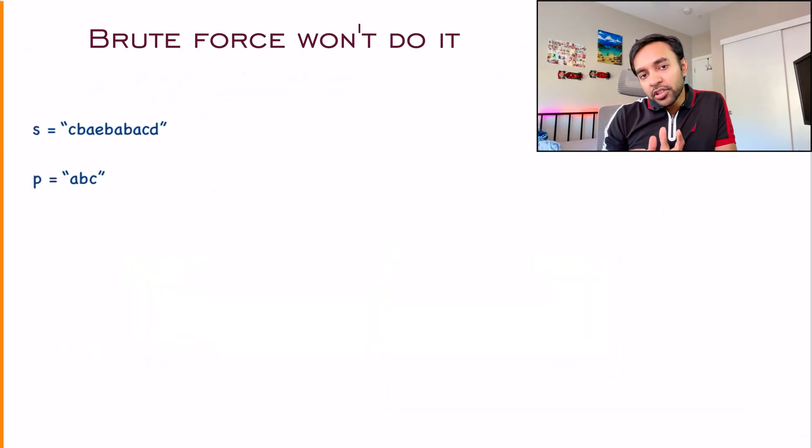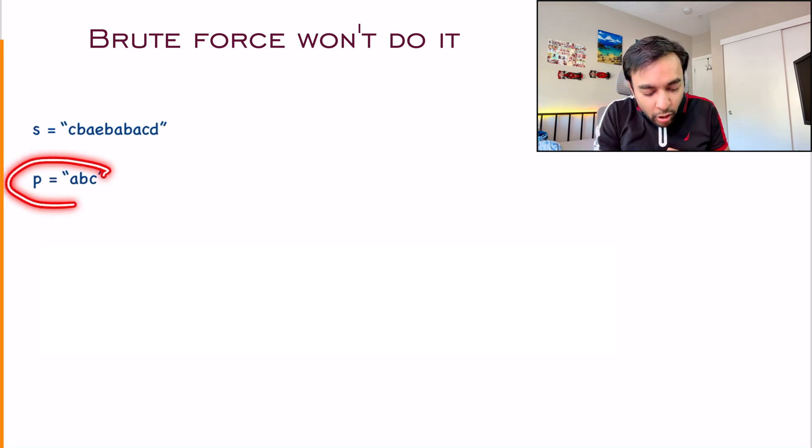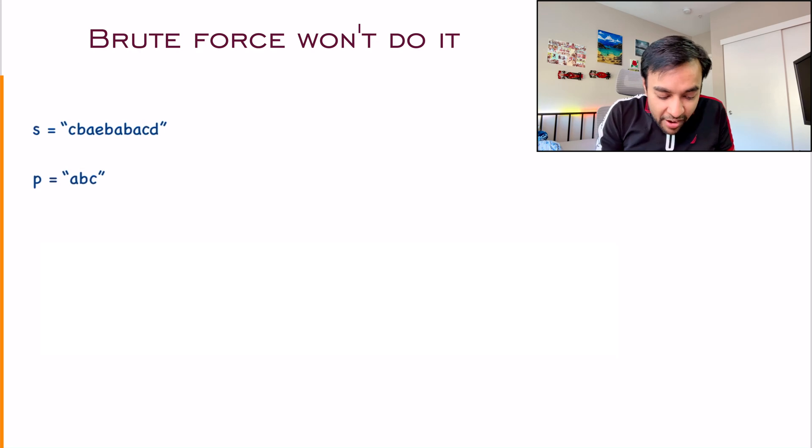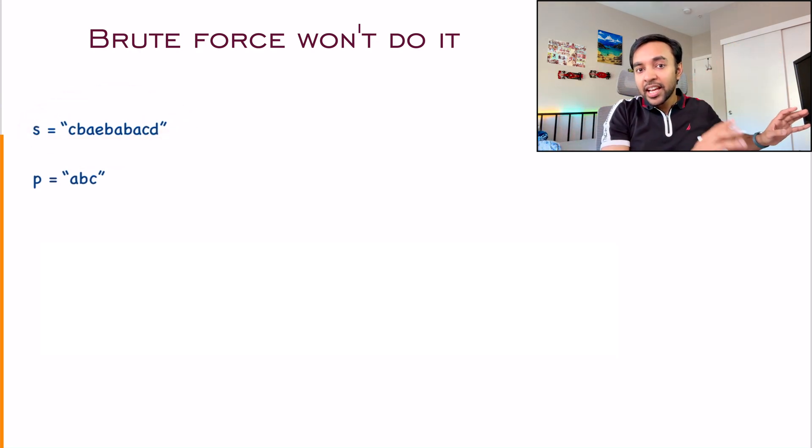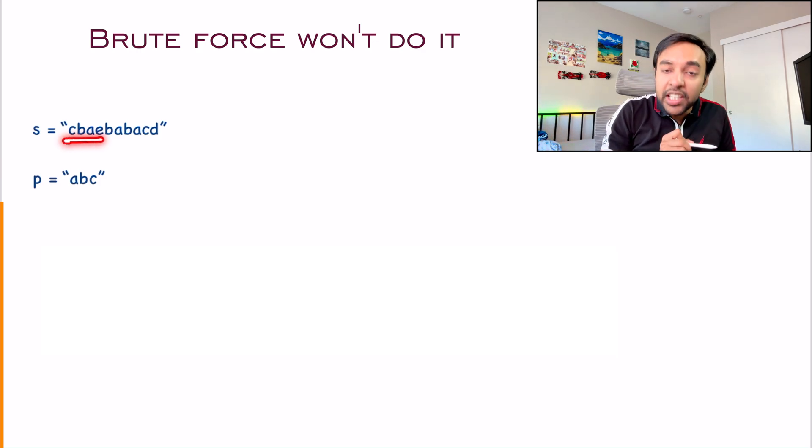When we talk about a solution, the brute force approach is very, very obvious. You can start off with the length of this second string and then find out all the different possible substrings from the original string and then find if they are anagrams or not. You can start from each of the character. First C, then B, then A, then E.